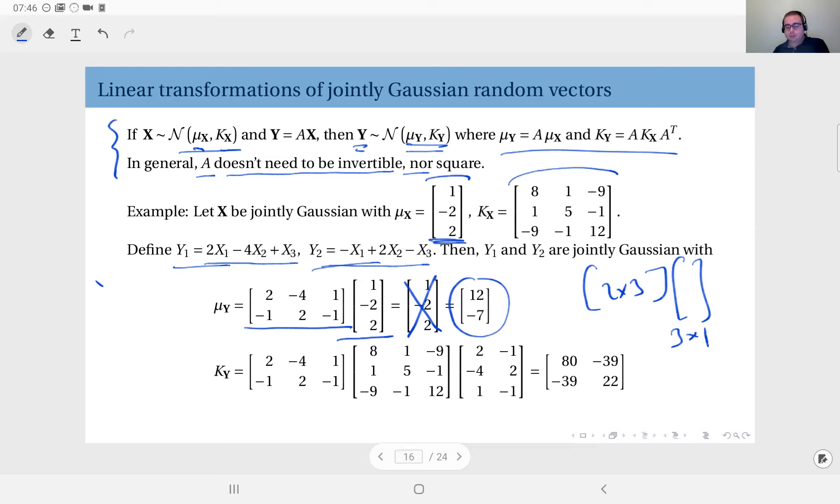You could have also done this just manually because the mean of X1 is 1, the mean of X2 is minus 2, the mean of X3 is 2. Therefore, you could have written the mean of Y1 as 2 times the mean of X1 which is 1, plus minus 4 times the mean of X2 which is minus 2, plus 1 times the mean of X3 which is 2, which should also give you 12.